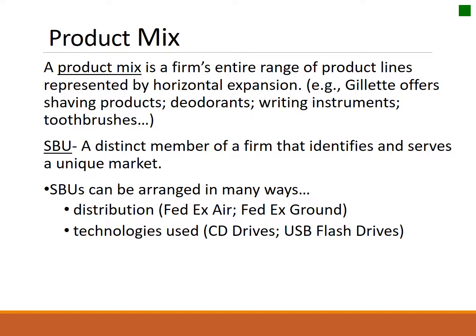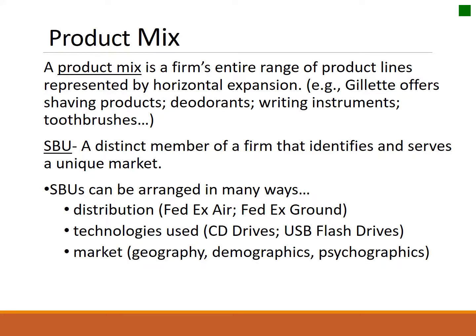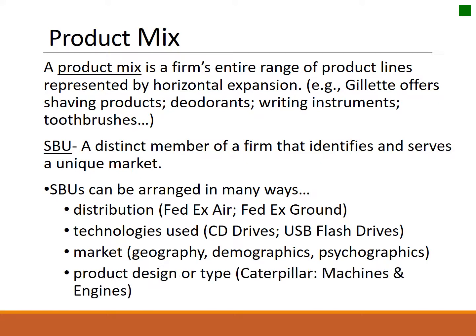A technology company dealing with memory devices might organize around CD drives, USB drives, internal hard drives, and external hard drives — all different technologies for computer memory. Caterpillar typically has three different business units: engines, machines, and parts. These three pieces can behave independently of each other. Although interrelated, they can certainly operate financially apart from each other if need be.